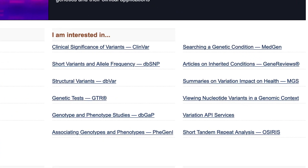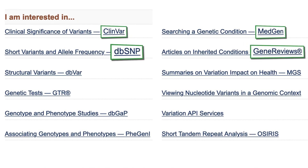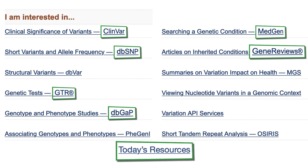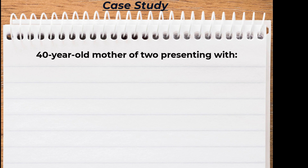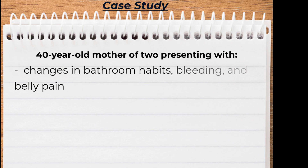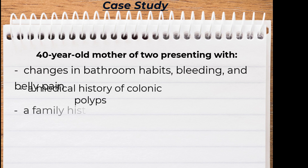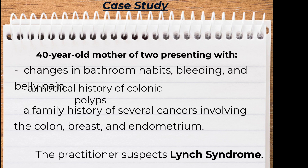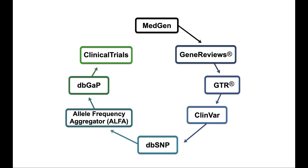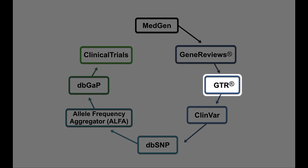NCBI's Medical Genetics and Human Variation resources are used in both clinical and research settings to help explore, diagnose, and treat conditions. We'll examine these resources from the point of view of a practitioner whose fictitious patient is a 40-year-old mother of two presenting with changes in bathroom habits, bleeding, and belly pain, a medical history of colonic polyps, and a family history of several forms of cancer involving the colon, breast, and endometrium. These features lead to a suspicion of Lynch Syndrome. Here is a quick summary of a path the practitioner might take at NCBI to explore diagnosis and treatment options for the patient.